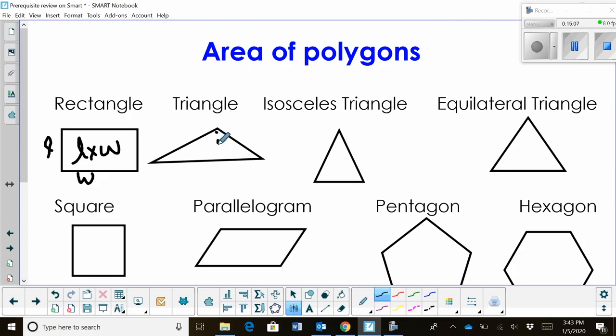For a triangle, you've got to figure out the height. Let's say that's h. It's just one-half the base times the height. The base becomes whatever side your height is drawn to.